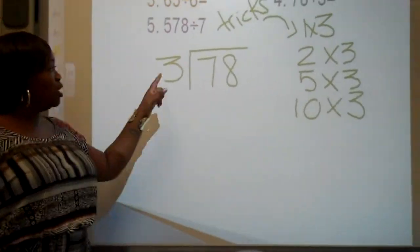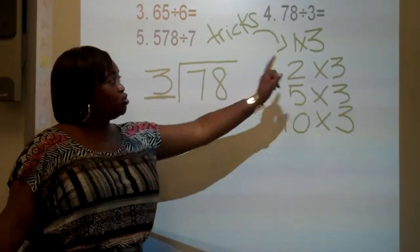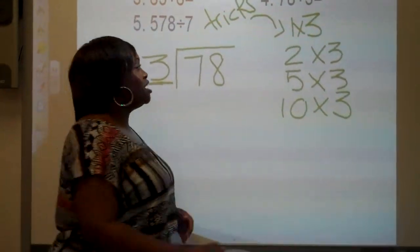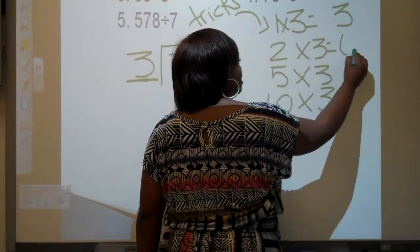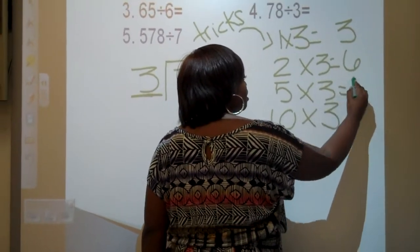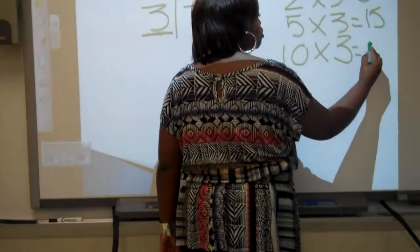So I'm multiplying all my tricks by my divisor, which is 3, which you just told me to do. Okay? So let's look at it. 1 times 3 is 3! 2 times 3 is 6! 5 times 3 is 15! And 10 times 3 is 30!